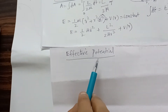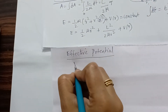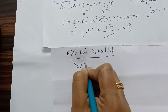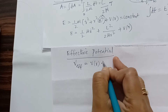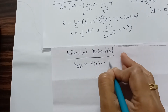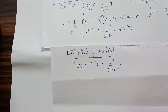From the total energy expression, a particle of mass μ moving under the influence of an effective potential can be written as: V_effective = V(R) + L² / (2μR²).